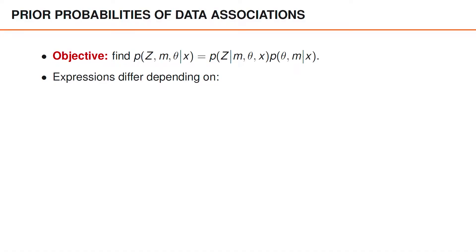In this video, we will study the expression for the simpler distributions and use that to find a suitable expression for the measurement model. Our first objective is to find a simple expression for the joint distribution of the measurement matrix Z, the number of measurements m, and the hypothesis theta, given x.